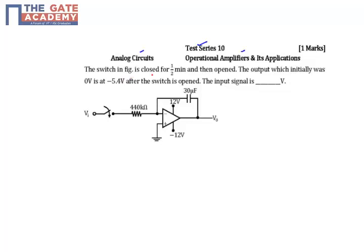Question says that the switch in the figure is closed for half a minute and then opened. The output which initially was 0V is at minus 5.4 volts after the switch is opened. Initially you have to start discharging the capacitor from zero to minus 5.4 volts.